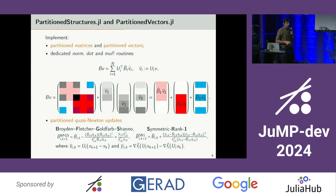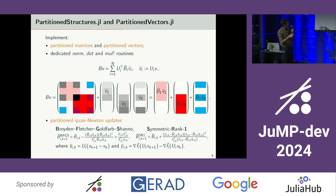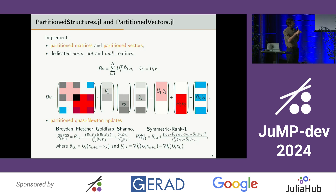Next we have to define some dedicated partition structures to perform optimization methods. The two modules — Partition Structures and Partition Vectors — implement several kinds of partition matrices and partition vectors, as well as several routines needed for optimization algorithms, such as the norm, dot product, and multiplication. For example, you can see the partition matrix multiplied by a partition vector, which results from the linear application of every Ui onto the vector v. The element matrix-vector products return a partition vector, and aggregated together they form a vector of size n.